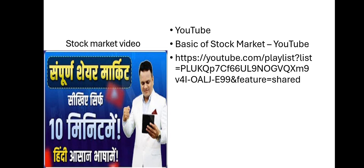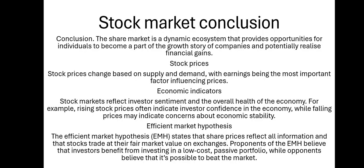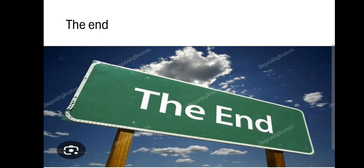Conclusion: the share market is a dynamic ecosystem that provides opportunities for individuals to become part of the growth story of companies and potentially realize financial gains. Stock prices change based on supply and demand, with earnings being the most important factor influencing prices. Economic indicators: the stock market reflects investor sentiment and the overall health of the economy — rising stock prices often indicate investor confidence, while falling prices may indicate concerns about economic stability. The Efficient Market Hypothesis, or EMH, says that share prices reflect all information and that stocks trade at their fair market value. Proponents believe investors benefit from investing in a low-cost passive portfolio, while opponents believe it is possible to beat the market.